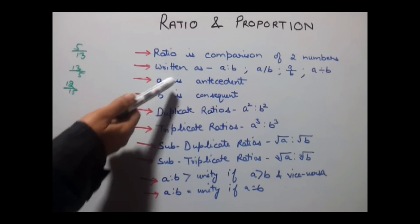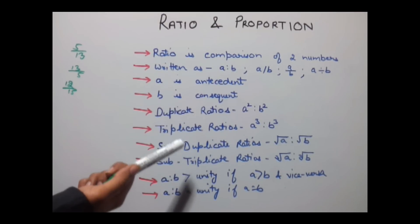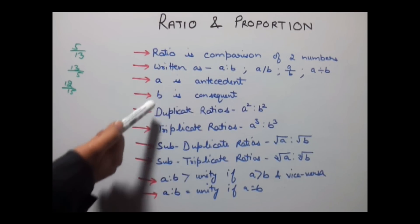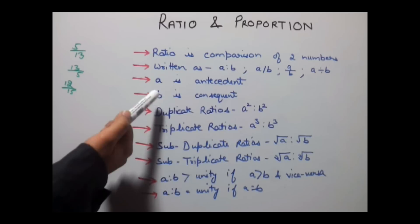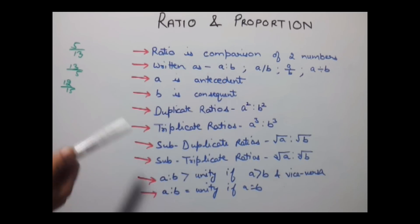The numerator in a ratio is called the antecedent, whereas the denominator is known as the consequent.